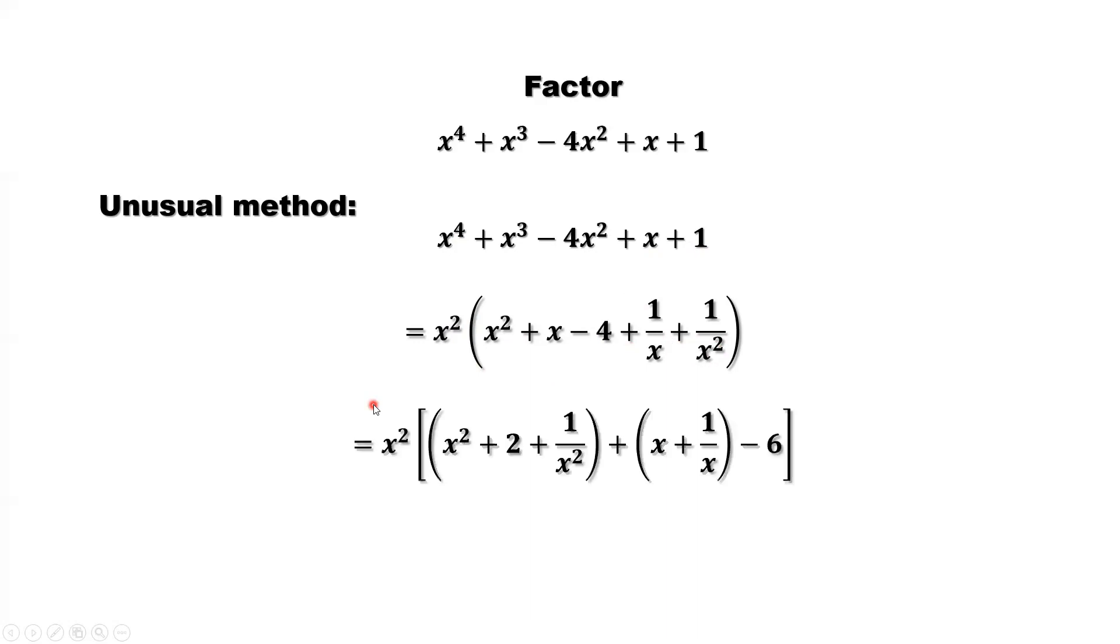Now look at this step. What are we doing? We are trying to use the perfect square method, completing this square. So here, group x squared and 1 over x squared, and put 2 here. And here, x plus 1 over x is here. And where comes the negative 6? Negative 6, you already took 2 here. 2 plus negative 6 is negative 4.